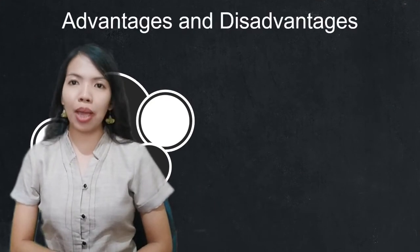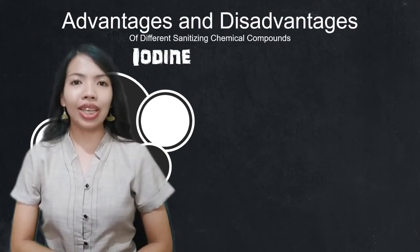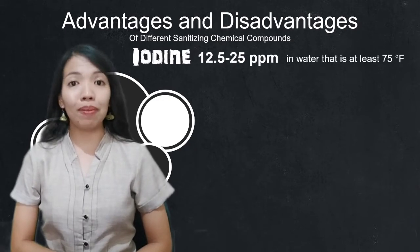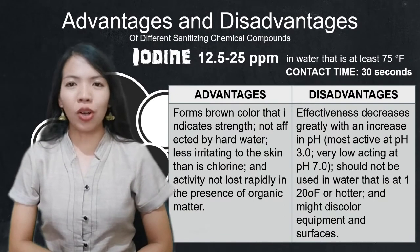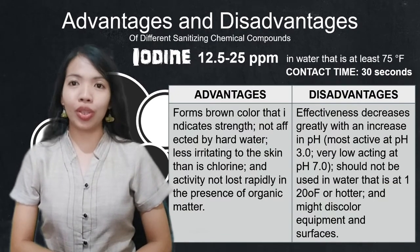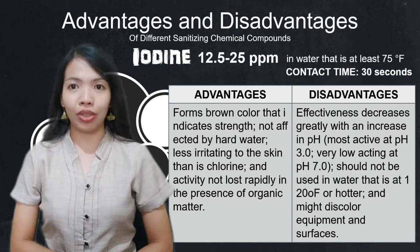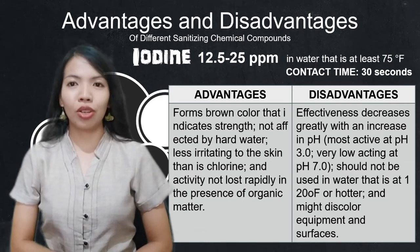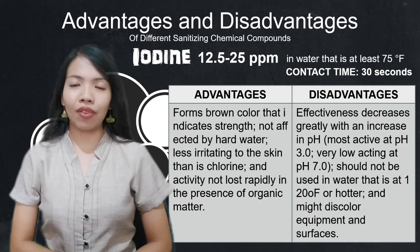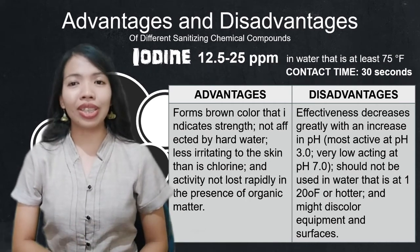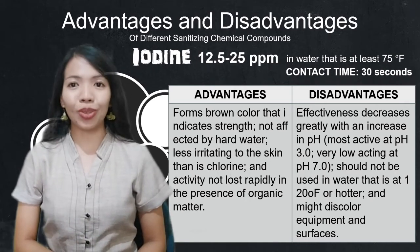Next, we have iodine. Iodine requires 12.5 to 25 parts per million in water that is at least 75 degrees Fahrenheit. The contact time of this solution on a surface is 30 seconds — longer than chlorine's 7 seconds — to completely destroy bacteria.